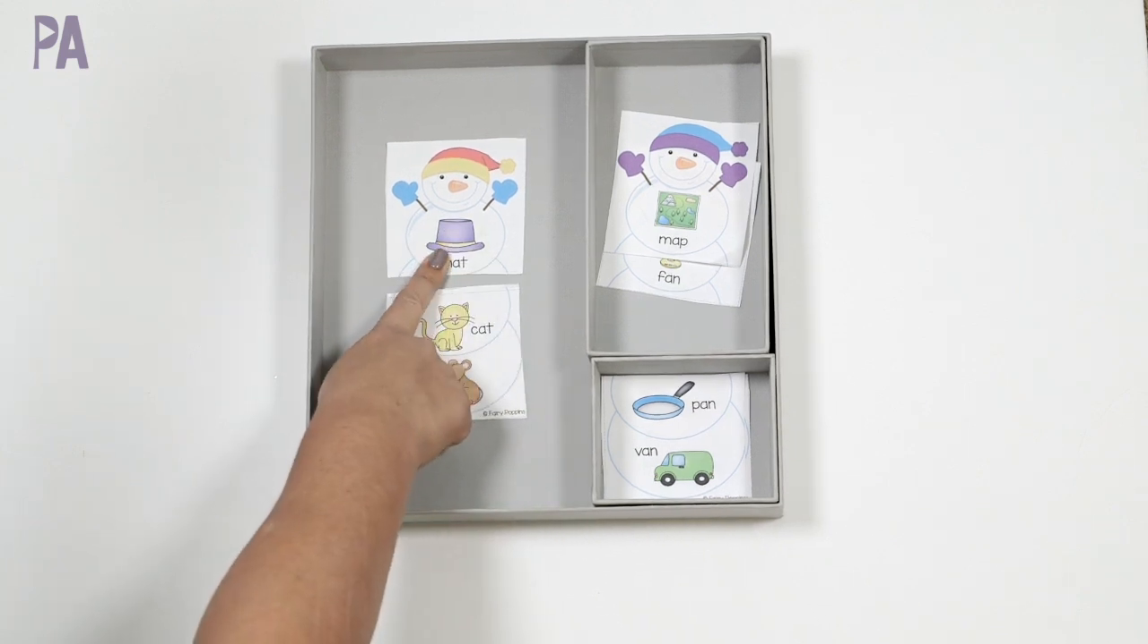Hat, cat, rat. Or you could do it opposite if you want, just to define a little workspace for them. So we are matching the rhyming words to the main rhyming word on the card. Aren't those super cute? I just think they're adorable.